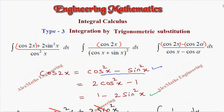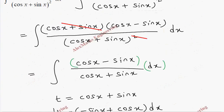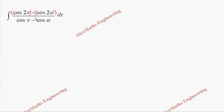For the third problem we have the integral of (cos 2x − cos 2α) / (cos x − cos α). We notice that everything is in terms of cosine, so it is better to use the second formula because cos 2x is expressed in terms of cos itself, that is 2cos²x − 1.